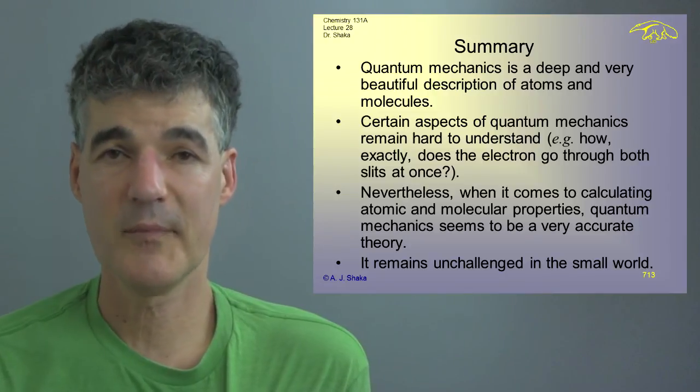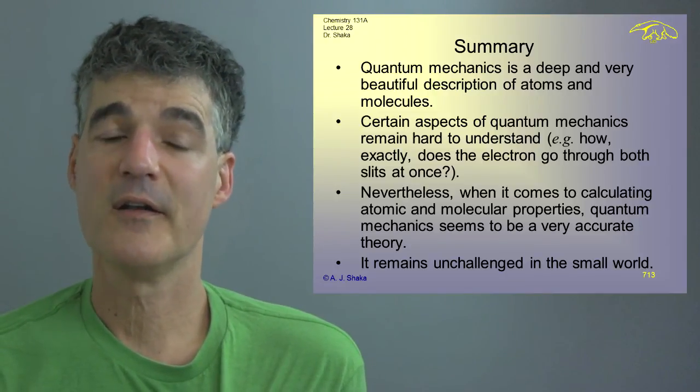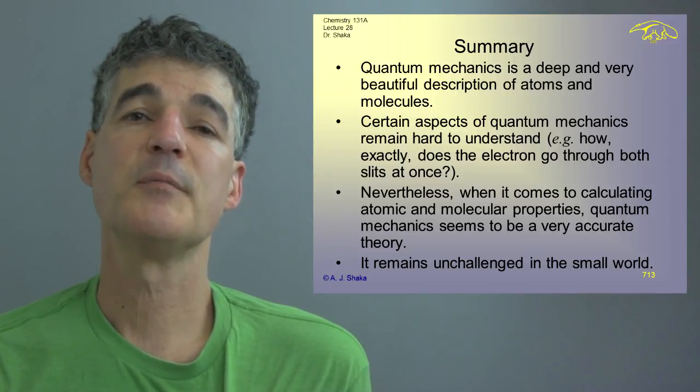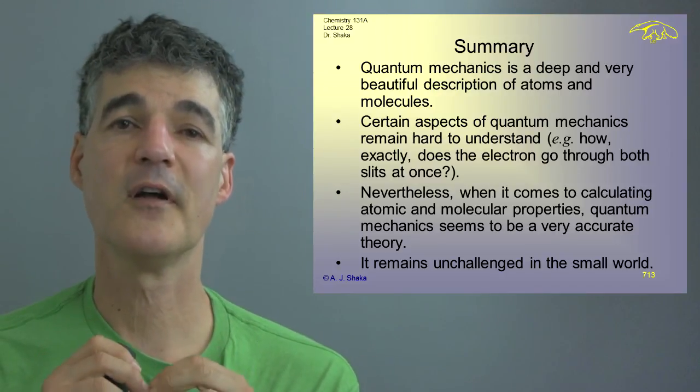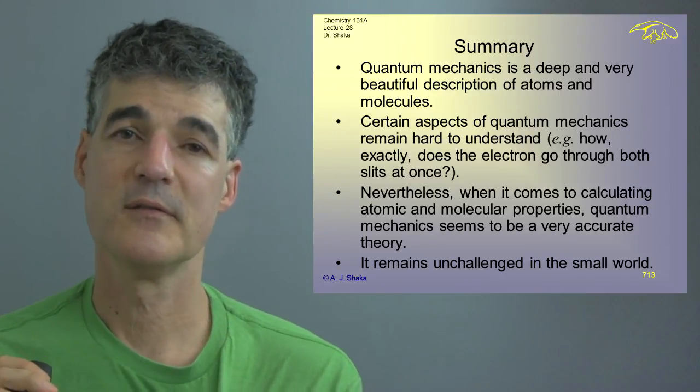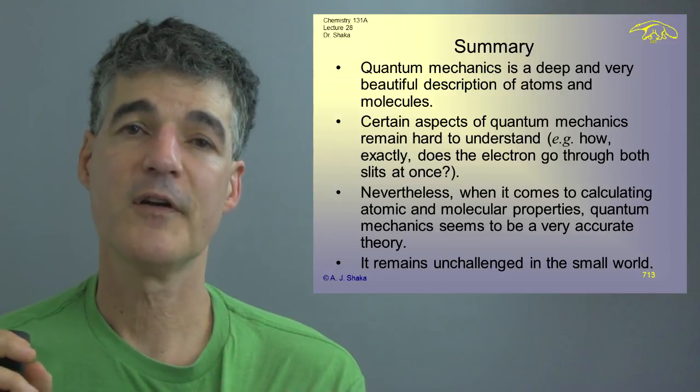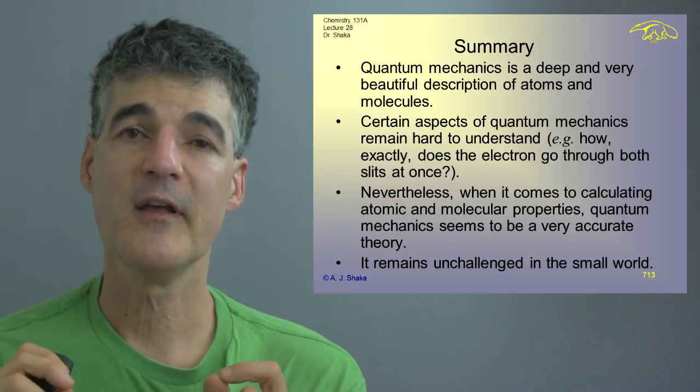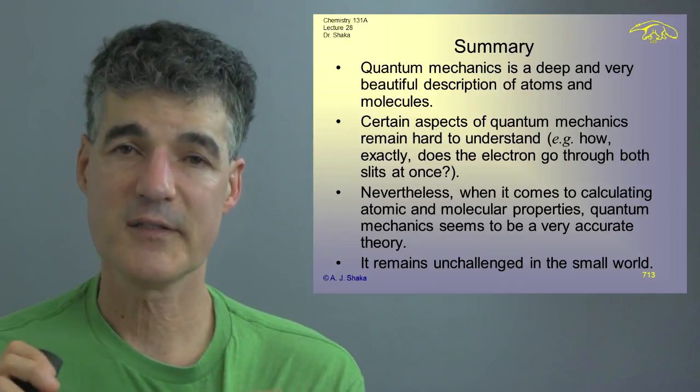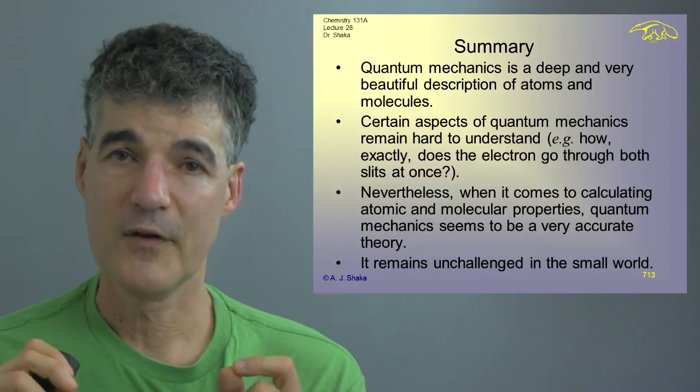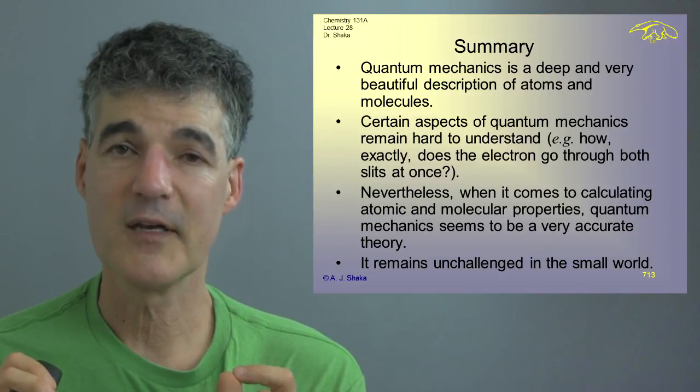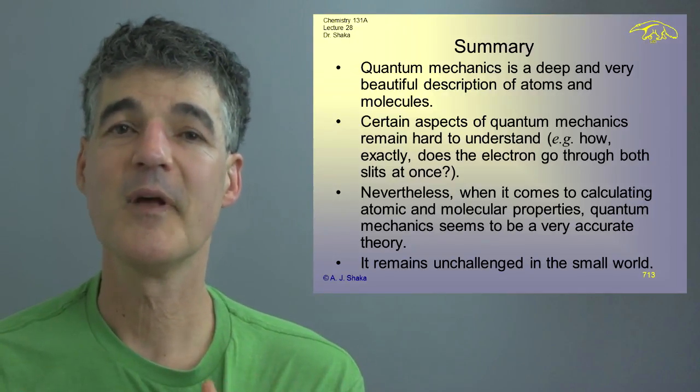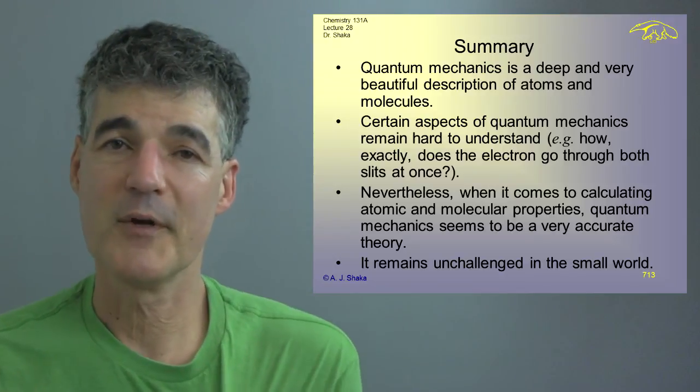Certain aspects of quantum mechanics I'd say remain hard to understand. For example, if you want a concrete explanation of exactly how an electron goes through both slits at once, that's very difficult. I don't think anybody can give you an explanation of that because for one thing, the only time it does that is when you don't look. And if you don't look, quantum mechanics says you don't really know what's going on.